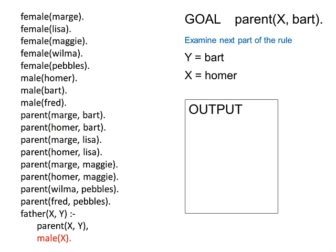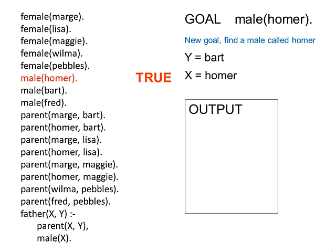Prolog examines the second part of the rule again, to find a male called X, and because X is Homer, Prolog is looking for a male called Homer. This is the new goal. Prolog is successful. Both parts of the original goal are true, so Prolog can output Homer.